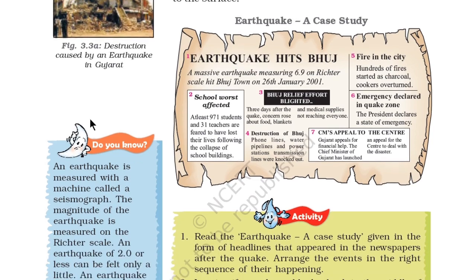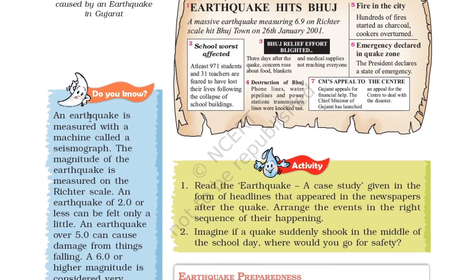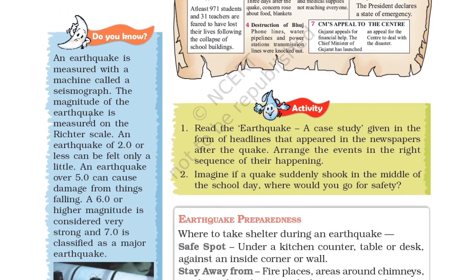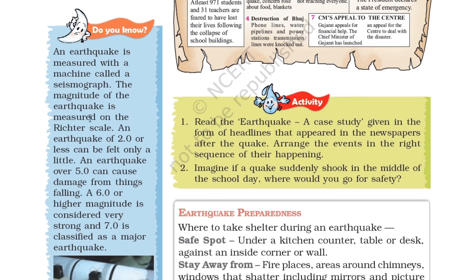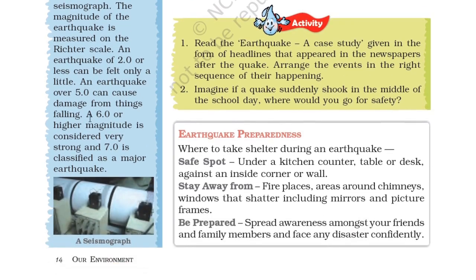An earthquake is measured with a machine called the seismograph. The magnitude of the earthquake is measured on the Richter scale. An earthquake of 2.0 or less can be felt only a little; an earthquake over 5.0 can cause damage from things falling; a magnitude of 6 or higher is considered very strong; and 7.0 is classified as a major earthquake. You can see a seismograph in the figure.